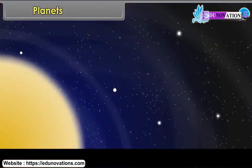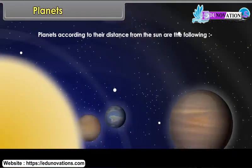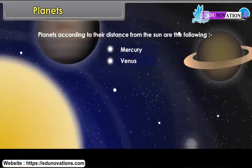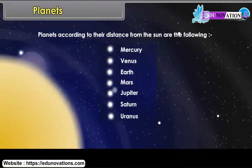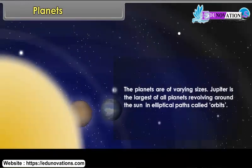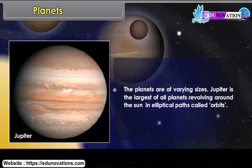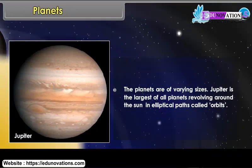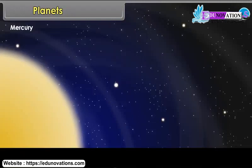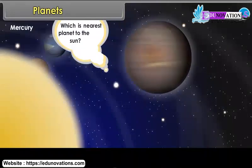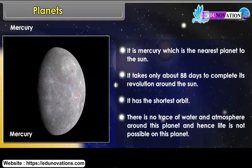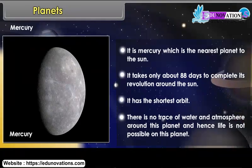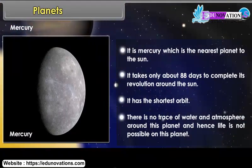The planets, according to their distance from the Sun, vary in size. Jupiter is the largest of all planets, and they all revolve around the Sun in elliptical paths called orbits. Mercury is the nearest planet to the Sun. It takes only about 88 days to complete its revolution and has the shortest orbit. There is no trace of water and atmosphere around Mercury, and hence life is not possible on this planet.